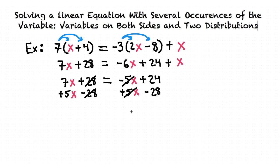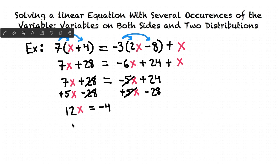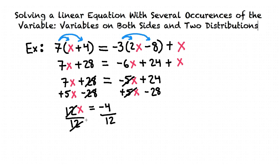Therefore, this equation can be written as 12x equals negative 4 because 7x plus 5x equals 12x and positive 24 minus 28 equals negative 4. Now we solve for x by dividing 12 on both sides. We can cancel out the 12 and x can be written as negative 4 over 12 which can be reduced down to negative 1 over 3.